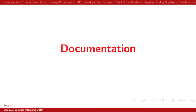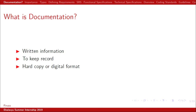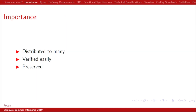So first we will talk about documentation. What is documentation? It is nothing but a written record based on a conversation that one or more persons have — to document it, to write it somewhere so that it can be referred to later. You can have a hard copy; earlier people used to write by hand, now people write on the computer. Why is it important? So that it can be distributed to many people, it can be verified easily, and it can be preserved.